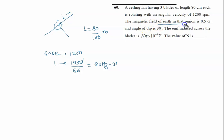The magnetic field of the earth in that region, B is given by 0.5 Gauss, so we will convert it to Tesla, it is 10 raised to the power minus 4 Tesla.